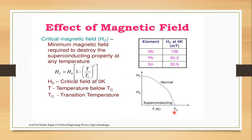Tc is called the critical temperature — the temperature at which the resistance of a specimen becomes zero and it enters the superconducting state. In that condition, resistance becomes zero, which shows the superconducting state.